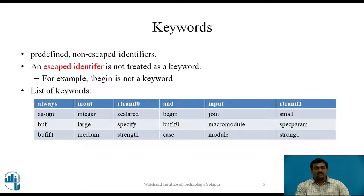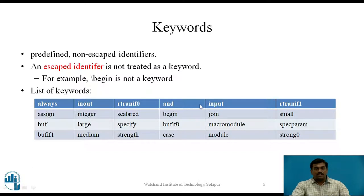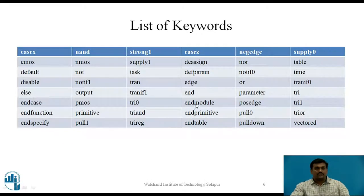Similar to C programming languages, there are a variety of keywords in Verilog HDL. Keywords in Verilog are nothing but predefined non-escape identifiers. An escape identifier is not treated as a keyword — for example, although 'begin' is a keyword, '\begin' is not a keyword. Following is the list of various keywords. In the last two video lectures we have seen some keywords such as assign, module, and endmodule, along with the remaining keywords.